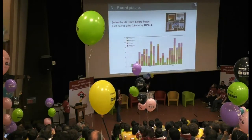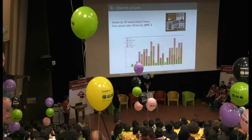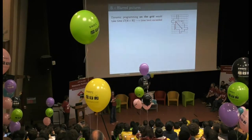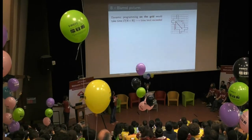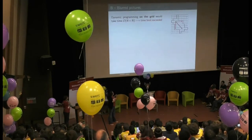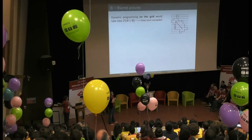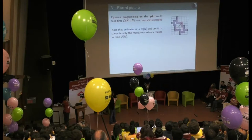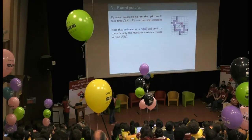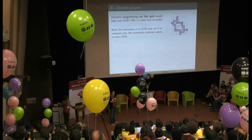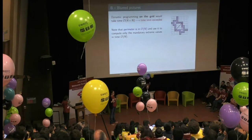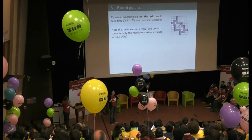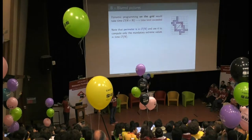Blurred Pictures was solved after 29 minutes by team UPC-1. The idea was to find the largest square in an area of connected pixels that fits in an n×n square. The natural idea is to use dynamic programming on the grid, but that gives O(n²) time which is too much given the limits. The key observation is that the perimeter of the area is only linear — walking along the perimeter, you can compute extreme values in lines, columns, and diagonals in linear time, allowing you to compute the biggest square.